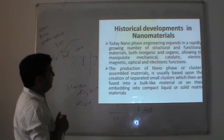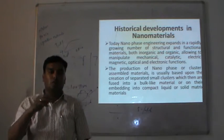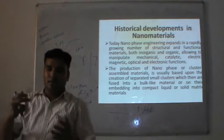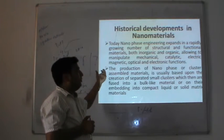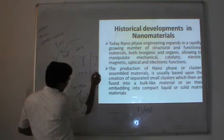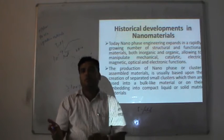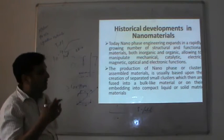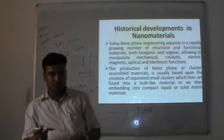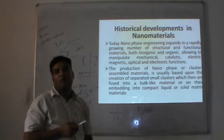In nanophases or nanovoids, we produce nanostructures — small structures placed atom by atom. When I arrange atoms in a particular way where I can change the property of material and get an enhanced material, these nanocrystals are in the size of about 10⁻⁹ metres. The production of nanophase or cluster-assembled material is usually based upon the creation of separated small clusters, which are then fused into the bulk solid material. These nanocrystals are made and then incorporated into bulk materials.